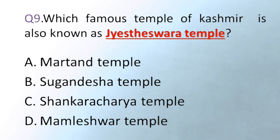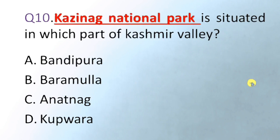Next question: Kazinag National Park is situated in which part of the Kashmir Valley? Option A Bandipora, B Baramulla, C Anantnag, D Kupwara. The correct answer is Baramulla — Kazinag National Park is located in Baramulla district.